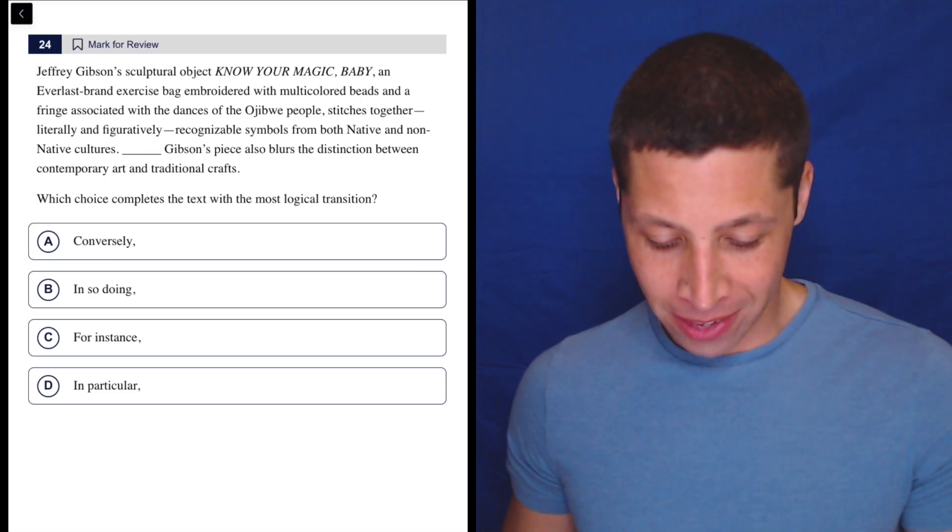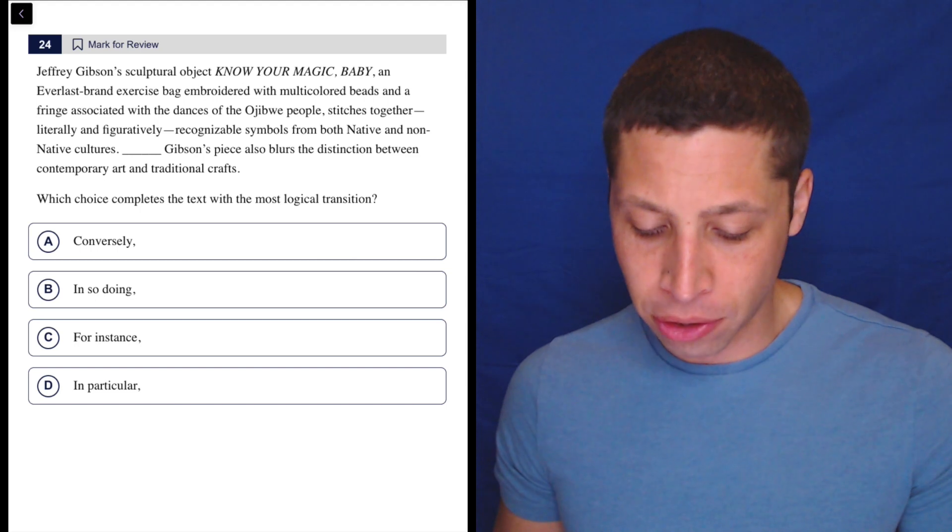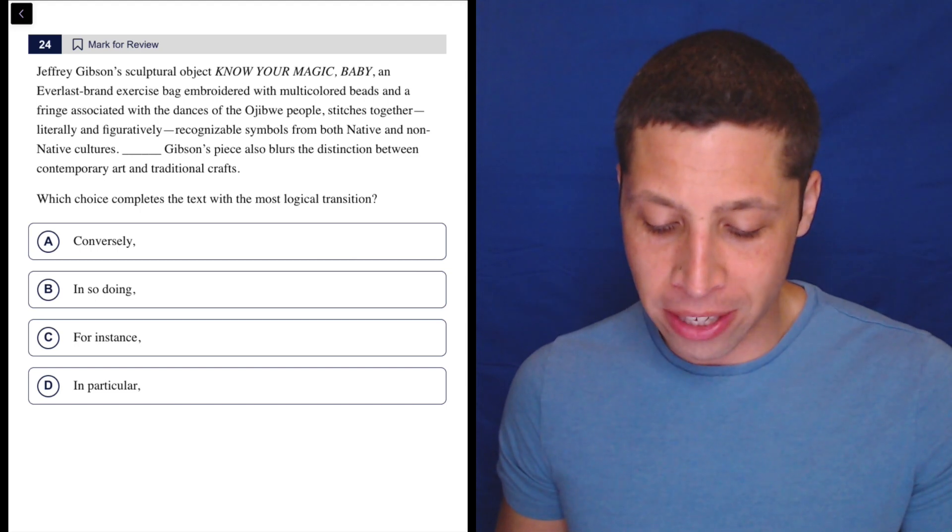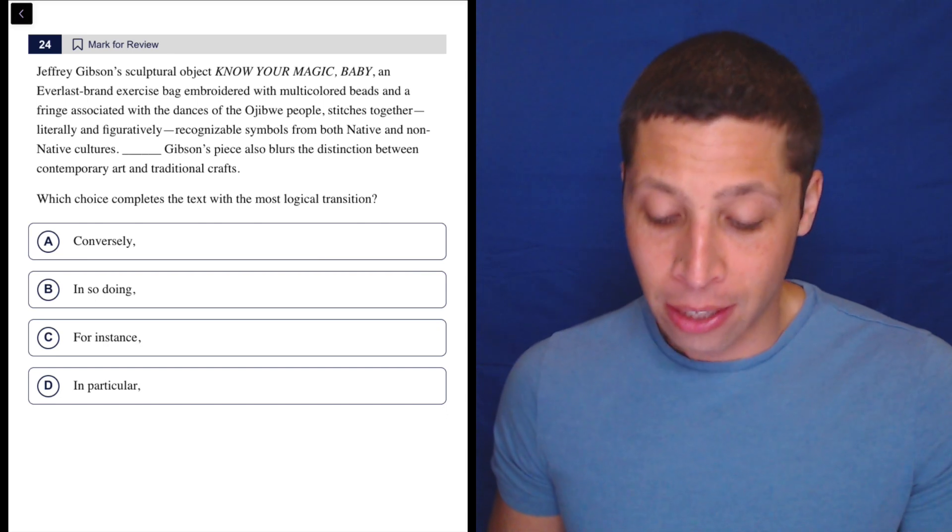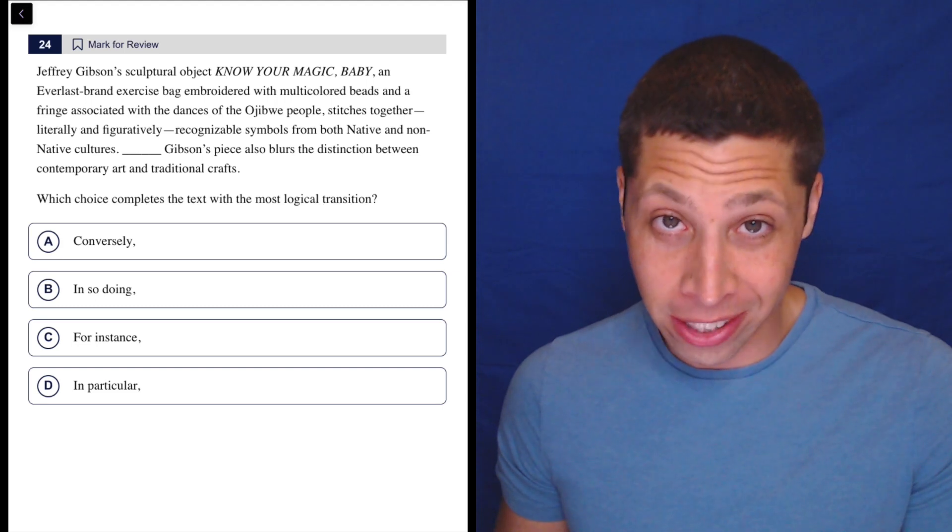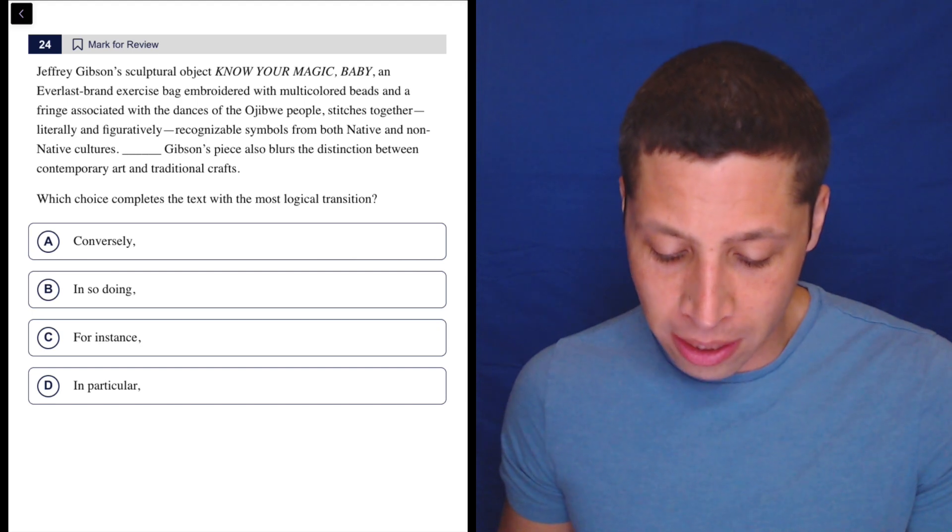All right, let's dive right into this one. Jeffrey Gibson's sculptural object, Know Your Magic Baby, an Everlast brand exercise bag embroidered with multicolored beads and a fringe associated with the dances of the Ojibwe people, stitches together, literally and figuratively, recognizable symbols from both native and non-native cultures. That's a big sentence. Gibson's piece also blurs the distinction between contemporary art and traditional crafts.